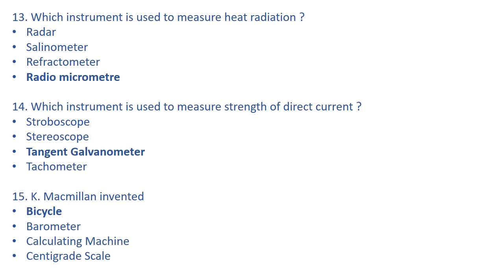The right answer is tangent galvanometer. Stroboscope is used to view rapidly moving objects. Stereoscope is used to view two-dimensional pictures. Tachometer is used to determine the rotational speed of a shaft, used in aeroplanes and motorboats. The instrument questions end here and inventor questions begin.